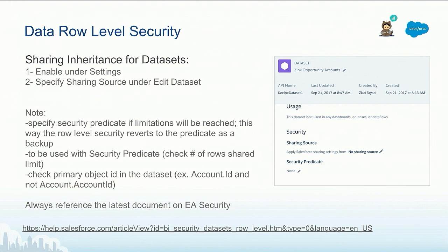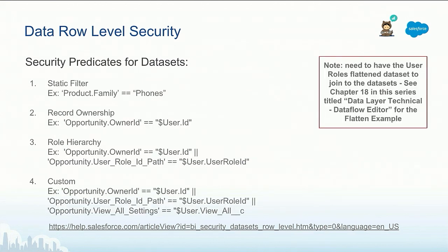It's very important to understand that you should look at sharing as an option first, and then consider security predicates. Or you can use both hand in hand. For example, most of your users might be fine with sharing — the sharing rules apply for them and everything works fine. For users who have a higher number of sharing rows, security predicates can kick in automatically, so you can define security criteria for them that enables them to view records according to a criteria that fits the security predicate.